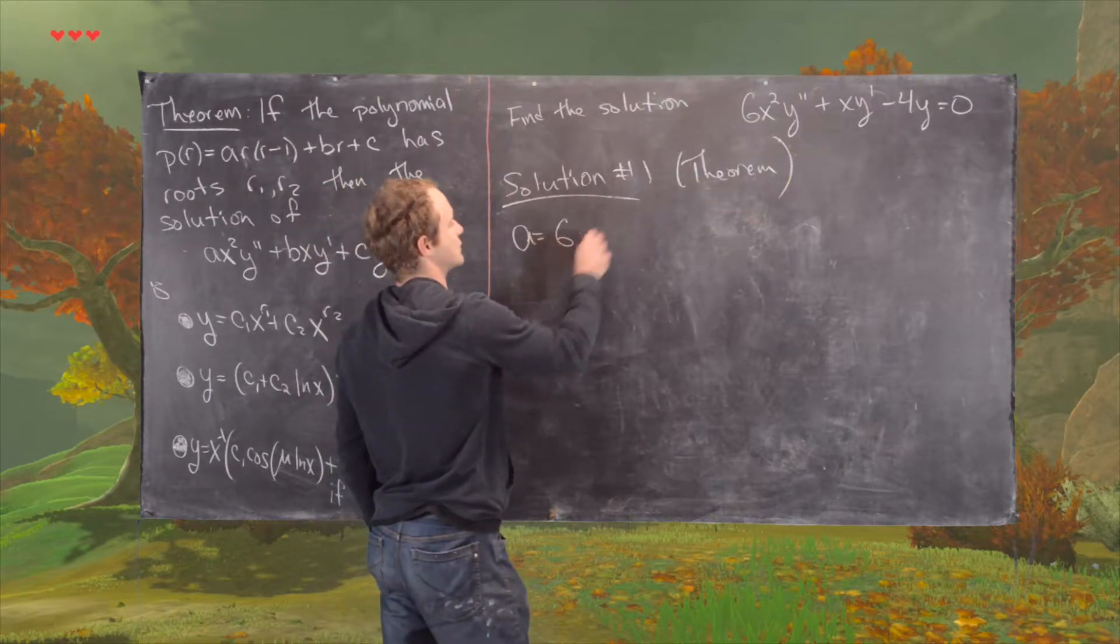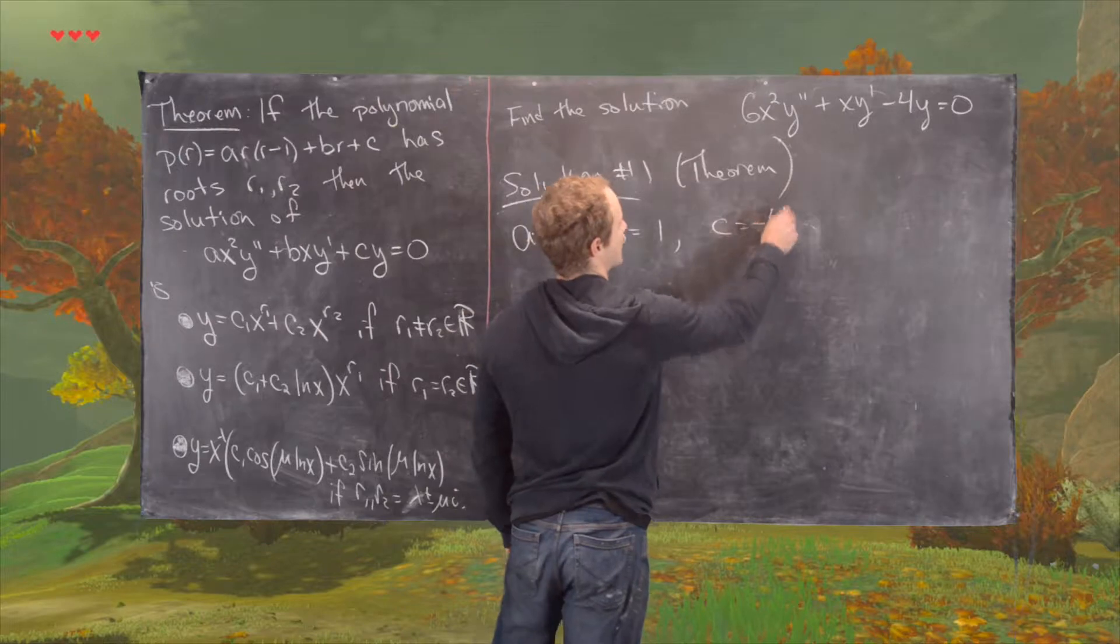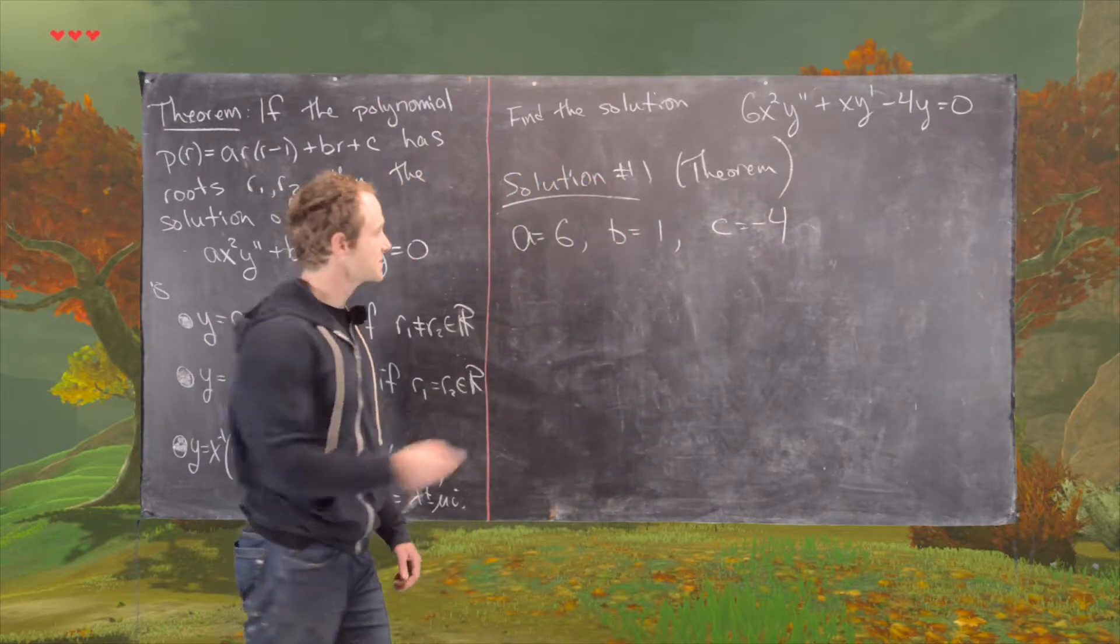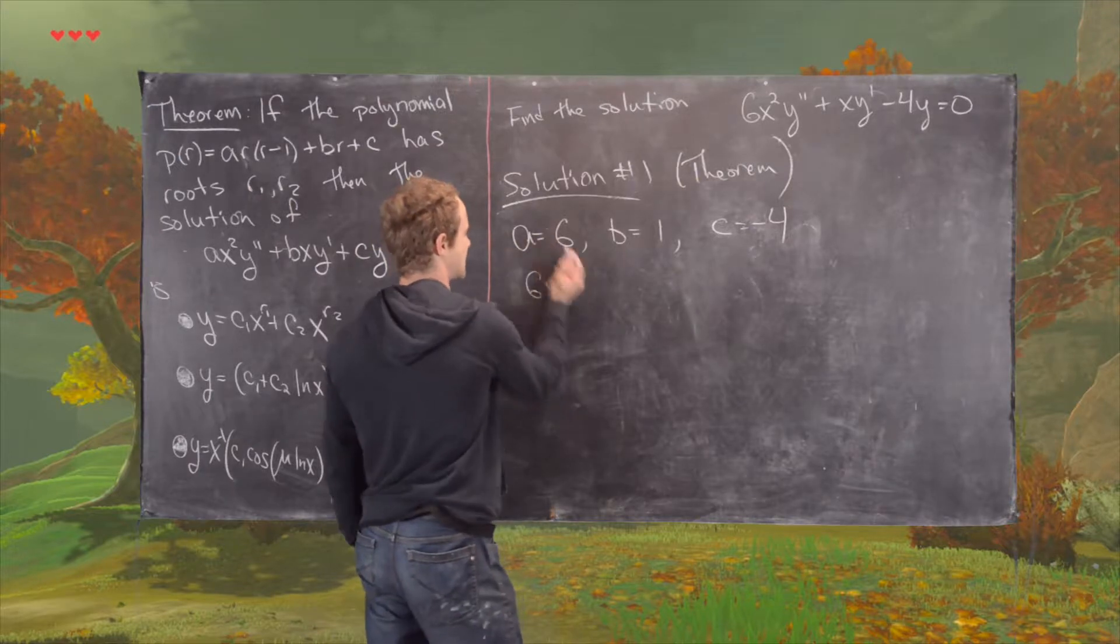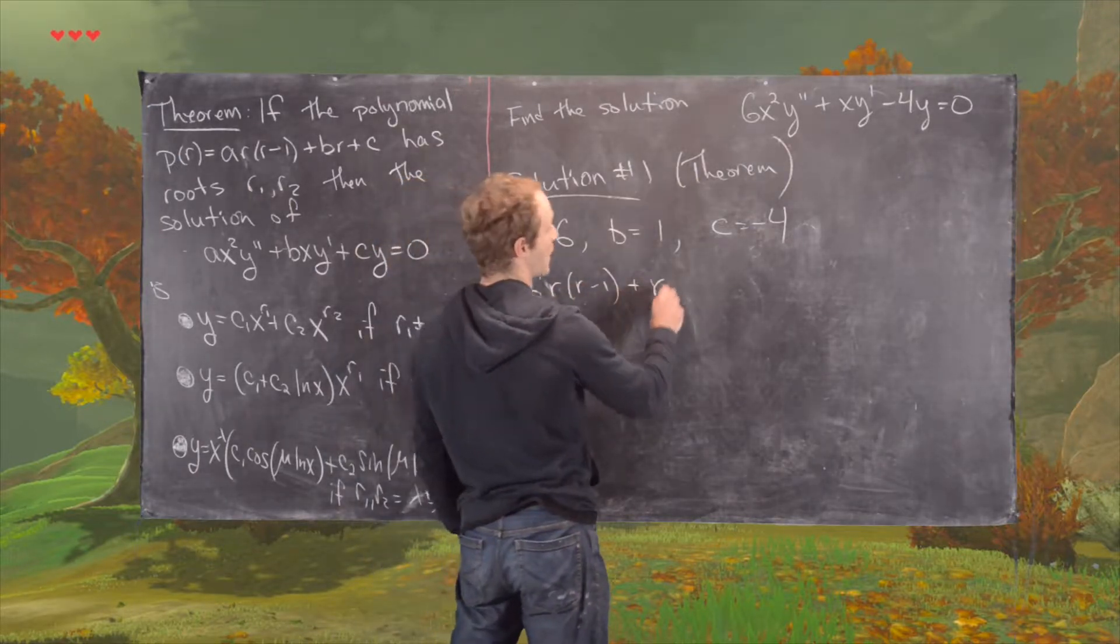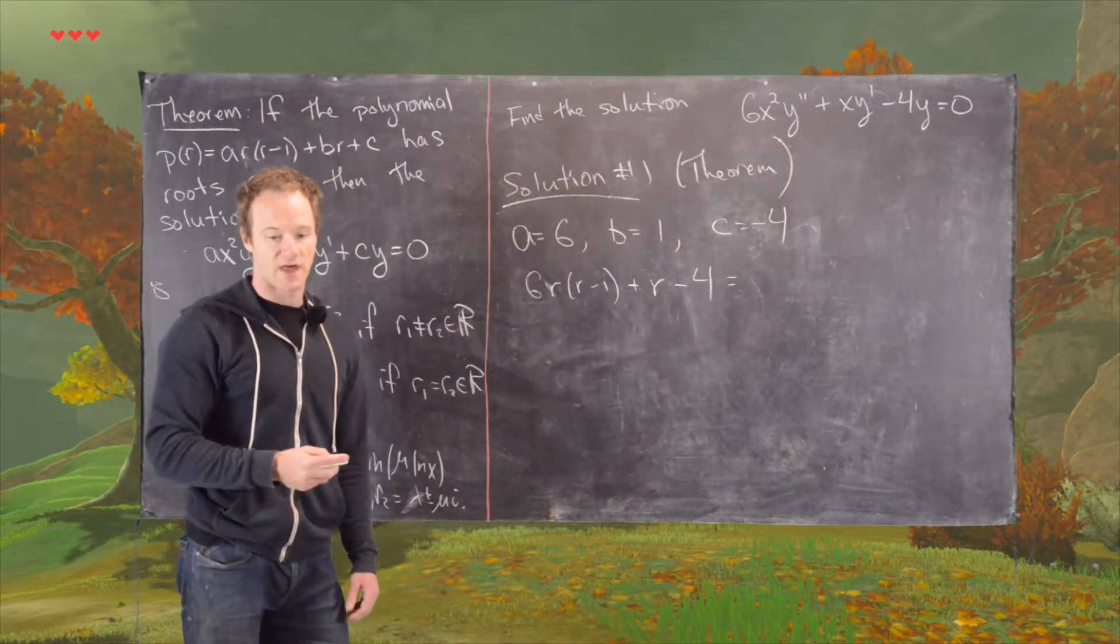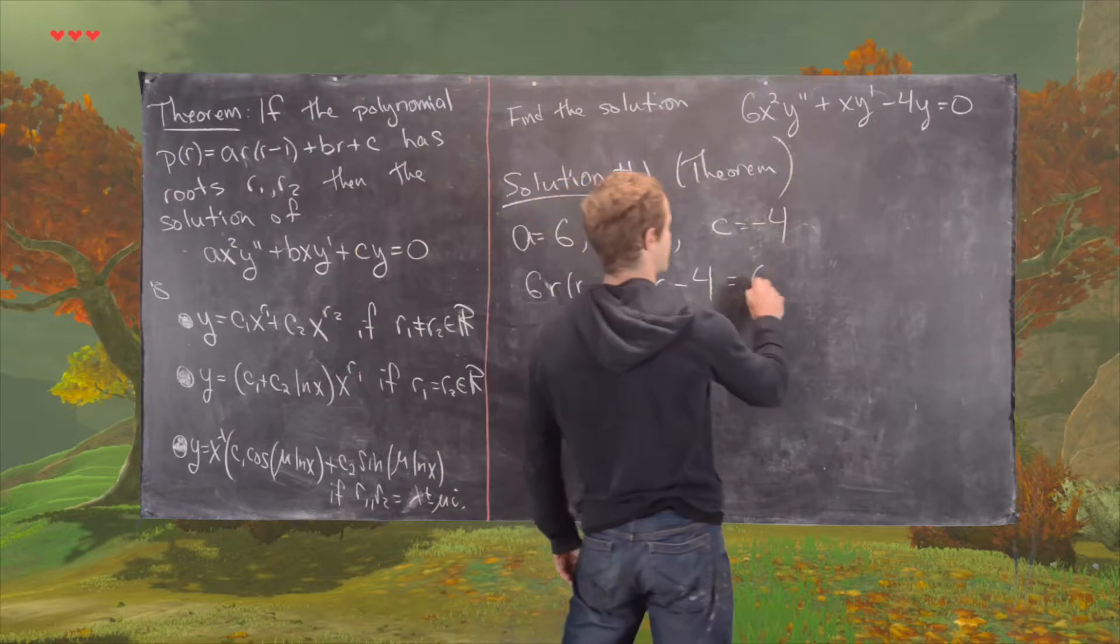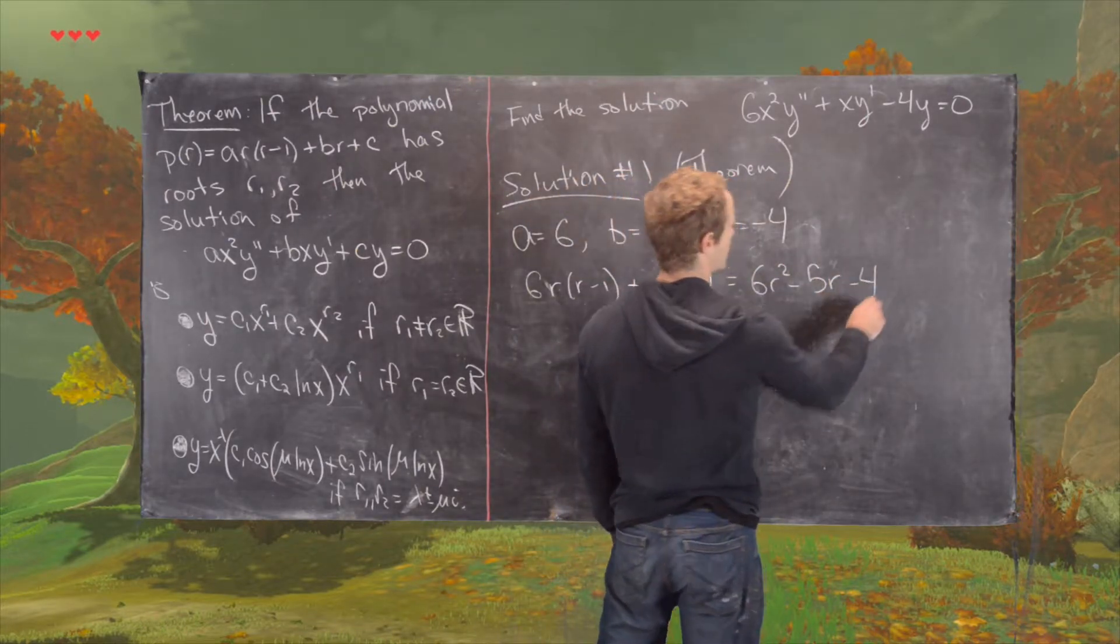We just notice that A is equal to 6, B is equal to 1, and C is equal to negative 4, which tells us that we have a polynomial 6 times R times R minus 1 plus R minus 4. But notice that thing simplifies as follows. We have 6R squared minus 5R minus 4.